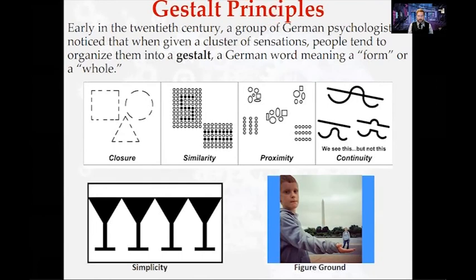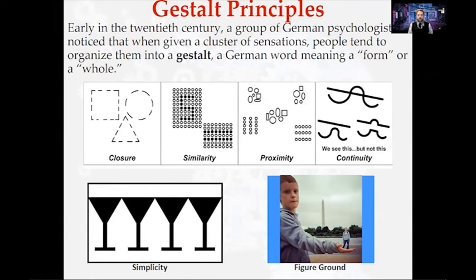Other Gestalt principles include simplicity: we tend to focus on the simplest design. What you probably saw in the bottom-left image was something like martini glasses, but you could also see trees, tiny houses, or spikes — all kinds of things. Our brain tends to find the simplest image. The last one is figure-ground: our ability to distinguish a figure that is close to us versus one that is far away. For example, a forced-perspective photo can trick your brain into thinking someone is holding a tiny person in their hand, when in reality that person is just far away.